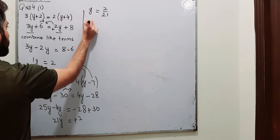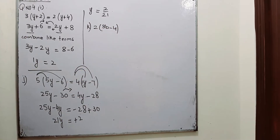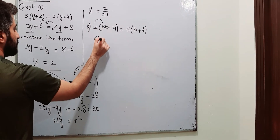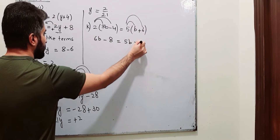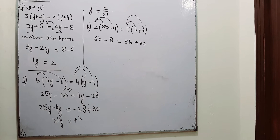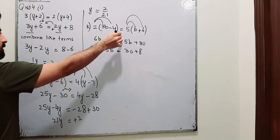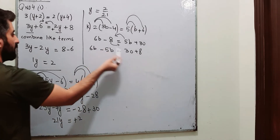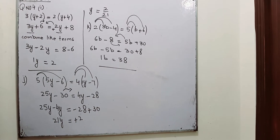Next one is part number k, question number 4, exercise 5A: 2 into 3b minus 4 is equal to 5 into 2b plus 6. Open the brackets: 2 into 3b is 6b, 2 into 4 is 8. 5 into b is 5b, 5 into 6 is 30. Combine the like terms — terms having b on one side, numbers on the other. This 5b is shifted to the left and becomes minus 5b; this 8 shifts right and becomes plus 8. 6b minus 5b is 1b, 30 plus 8 is 38. This is the answer for part number k.